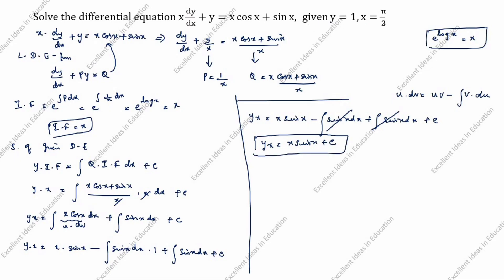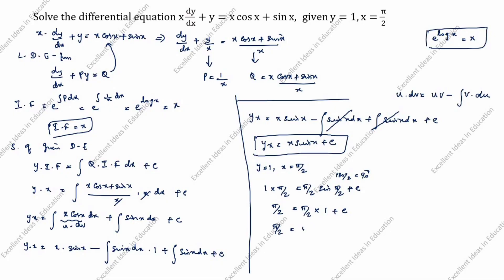Now applying the initial condition: y = 1 when x = π/2. Substituting: 1 × (π/2) = (π/2) × sin(π/2) + c. Since sin(π/2) = sin 90° = 1, we get π/2 = π/2 × 1 + c, so π/2 = π/2 + c. Therefore c = 0.